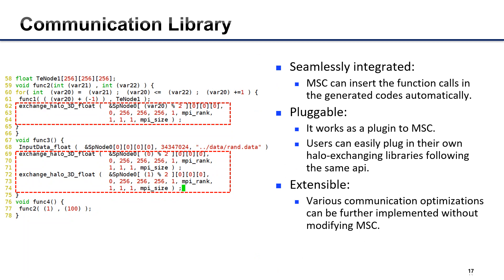Besides, the communication library is seamlessly integrated with MSC, and MSC can insert function calls in the generated code automatically. It is pluggable and extensible—users can easily plug in their own halo exchanging libraries or additional optimizations following the same API.